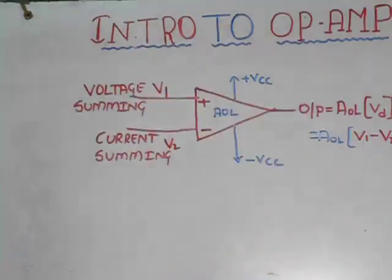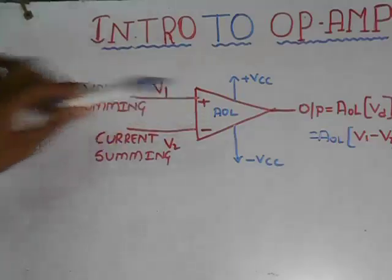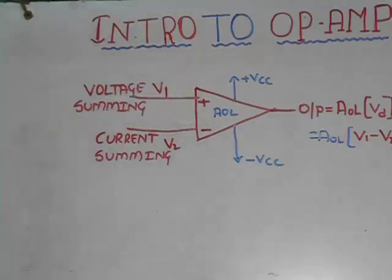This is why the op-amp is called a differential amplifier — it amplifies the difference between the two inputs provided to it. The important property of this differential amplifier is that it provides high gain when two opposite signals are given as inputs. Now let us see the transfer characteristics of this device.